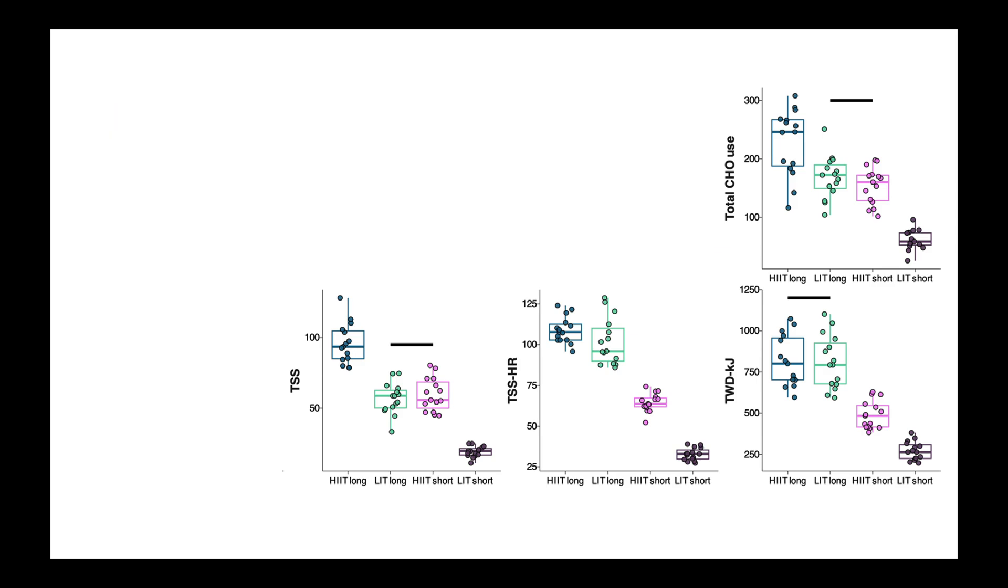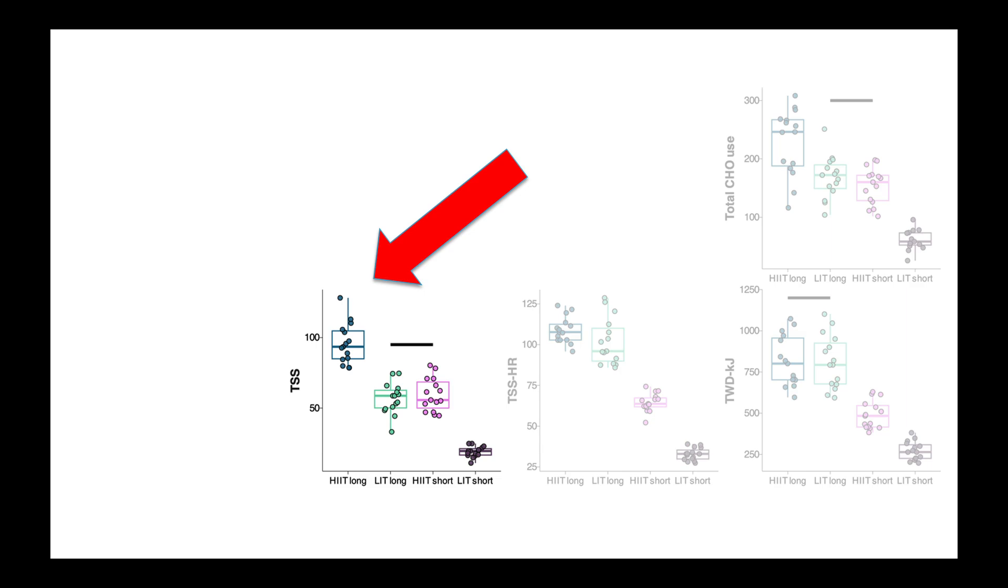The black lines indicate no significant difference between sessions for that given measure. If there's no black lines, that means the sessions are significantly different from each other. Let's first focus in on TSS. What this is showing is that TSS was the highest for the long interval session, whereas the long easy session and the short interval session led to the same TSS. And the short easy session had the lowest TSS. Looking at total carb use, we see the same pattern. Long intervals burn the most, long easy and short intervals burn the same, and short easy burn the least. Now it's not too surprising that the hard long session burned the most and the short easy one burned the least, but it is really interesting to see that the long easy and the short hard ones burned the same.